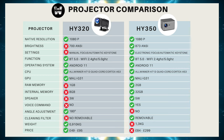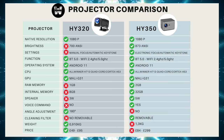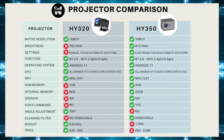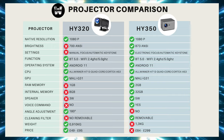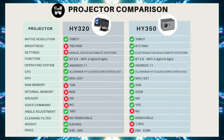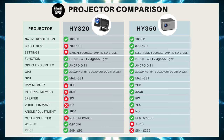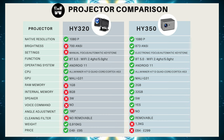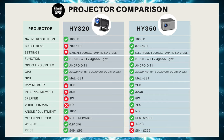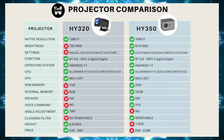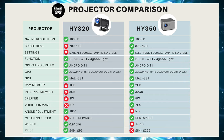Regarding RAM and internal memory, the HY350 leads the way with double the RAM, as the HY320 only has 1 GB. This greatly improves system fluidity, and the internal memory is four times larger than the HY320, so the HY350 also leads in these two aspects.